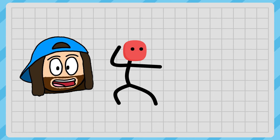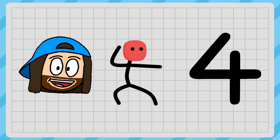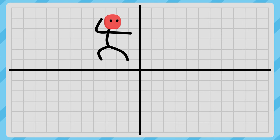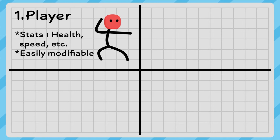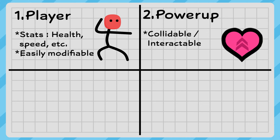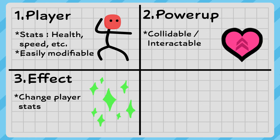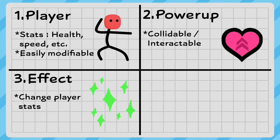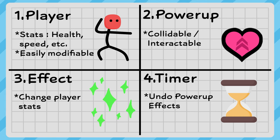If we pick out the important components, we're going to need four things. First, we're going to need a player character who we're going to modify in some way. Second, we're going to need a powerup object that a player can pick up or interact with. Third, we're going to need effects that modify a player's behaviour, whether it's health, speed, jump height, etc. And fourth, we're going to need some form of timer so that we can undo these effects after a while.